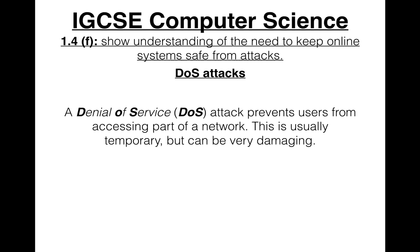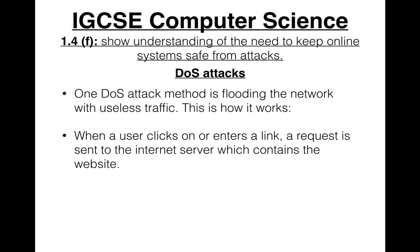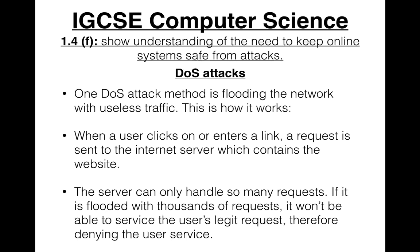One DOS attack method is flooding the network with useless traffic. When a user clicks a link, a request is sent to the internet server hosting the website. The server can only handle so many requests, so if it's flooded with thousands of requests, it won't be able to service the user's legitimate request — therefore denying the user service.